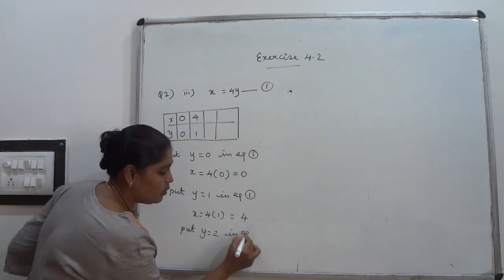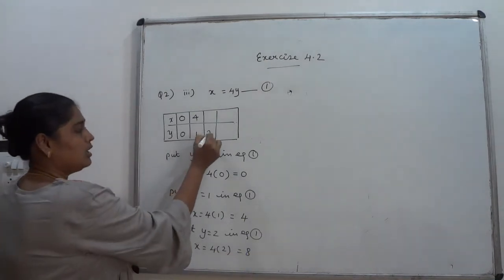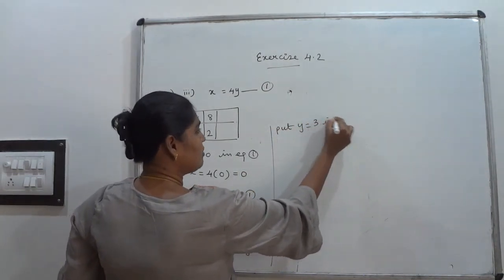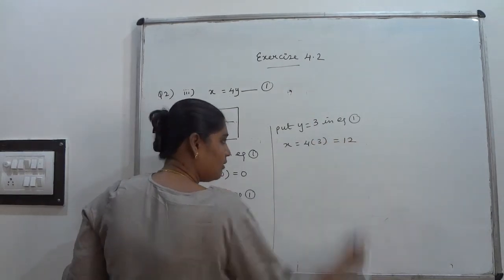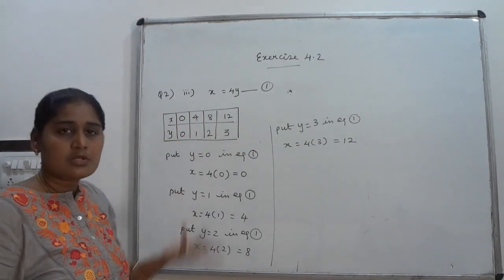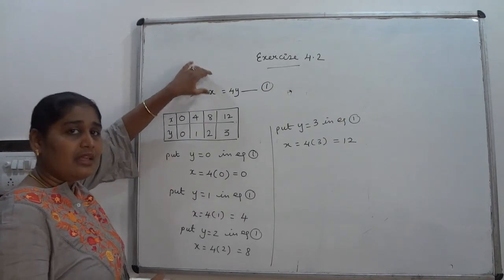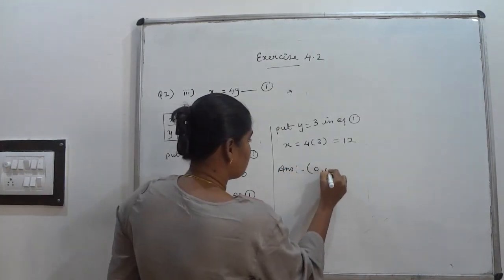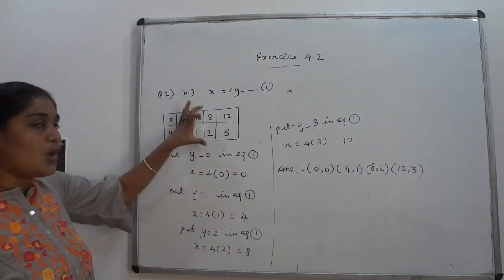Put y = 2 in equation number 1: x = 4 × 2 = 8. Put y = 3: x = 4 × 3 = 12. Note that you can also vary x to get the solutions. The 4 solutions written as coordinate points are: (0, 0), (4, 1), (8, 2), and (12, 3).